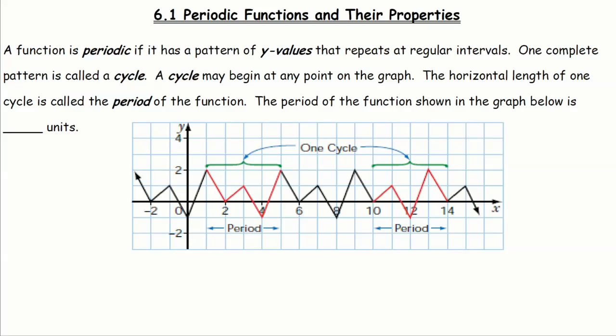Today we're going to be looking at periodic functions and their properties. A function is periodic if it has a pattern of y-values that repeat over regular intervals. One complete pattern is called a cycle. If you look at our example, you can see two cycles are shown. It doesn't matter where you start — here we start at y equals two, cycle through the graph, and eventually end up back at y equals two.